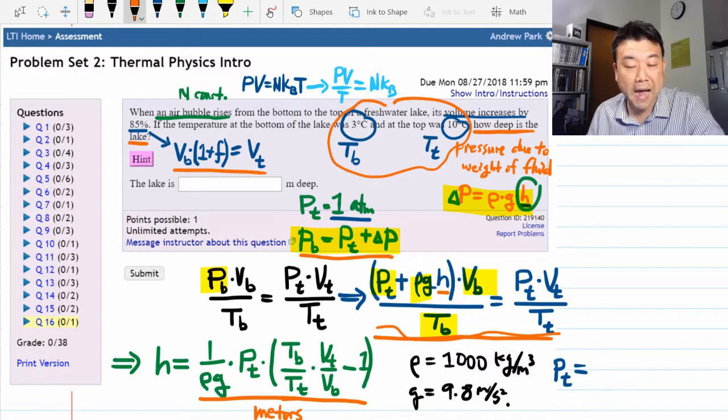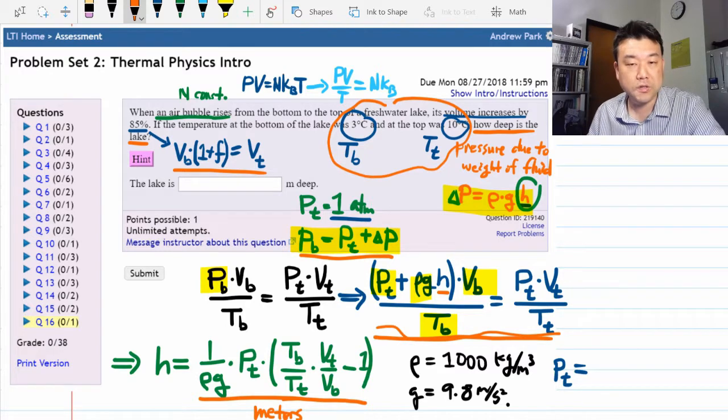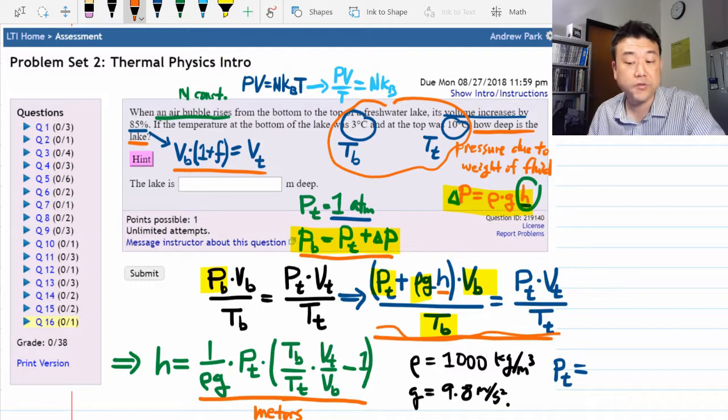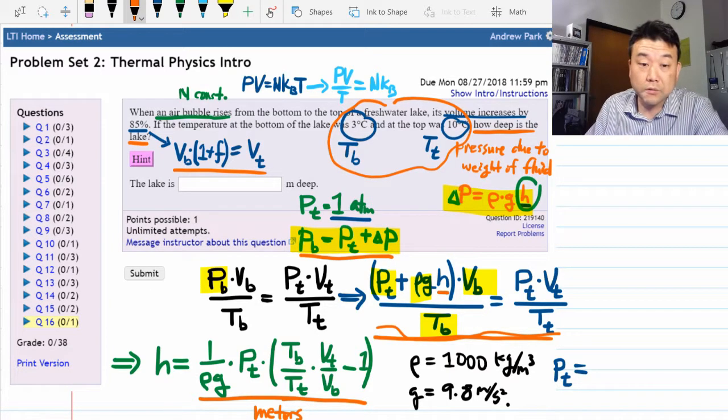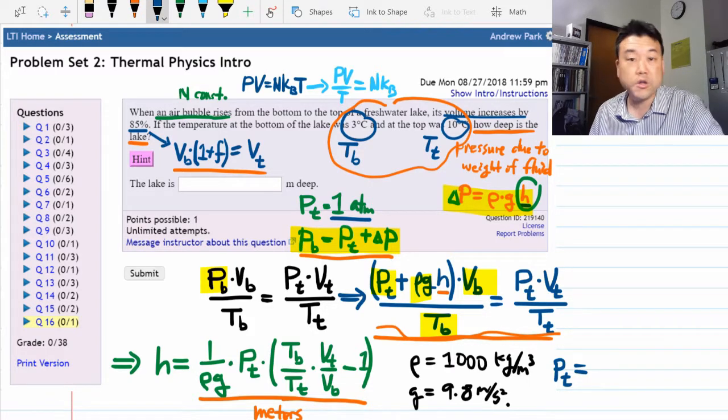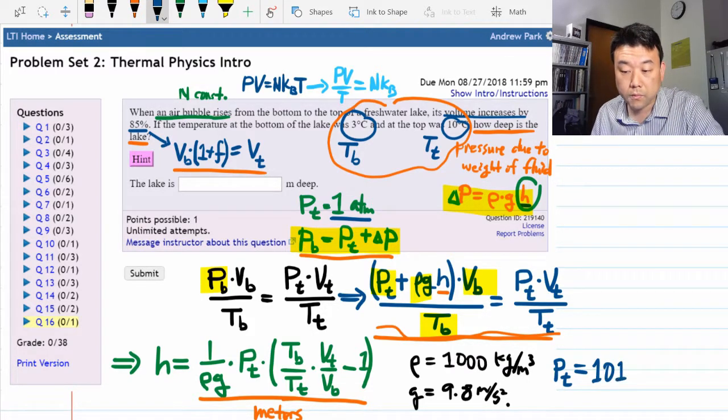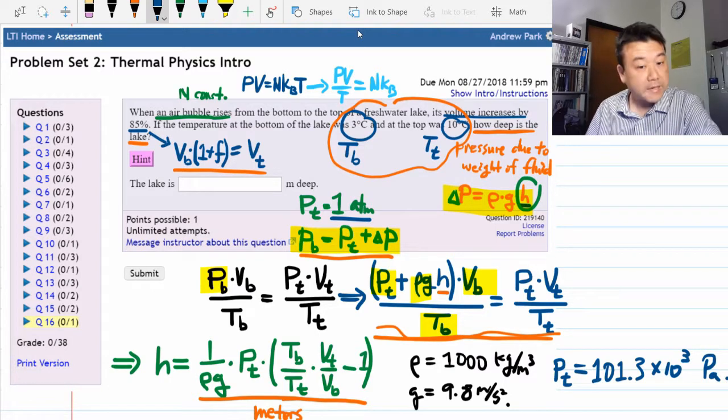But when it's in Pascals, the basic units in Pascals—kilograms, meters, seconds—they will all work out in a way that the final answer has the unit you are expecting. So all this comes down to, for pressure at the top, you need to plug in 101.3 times 10 to the 3 Pascals.